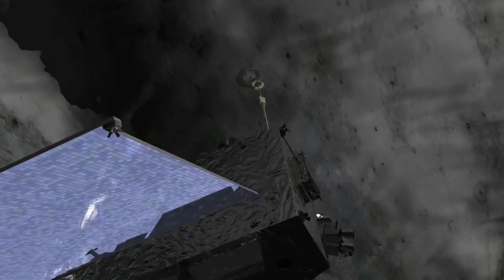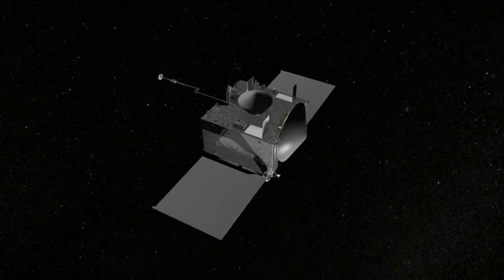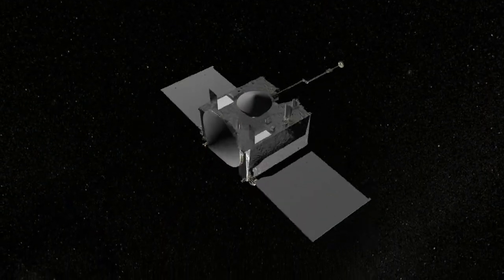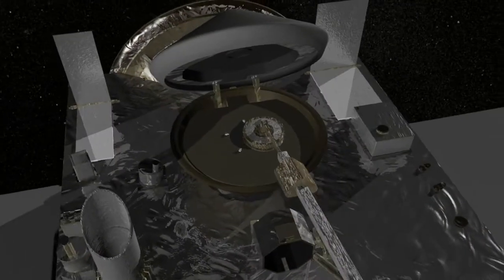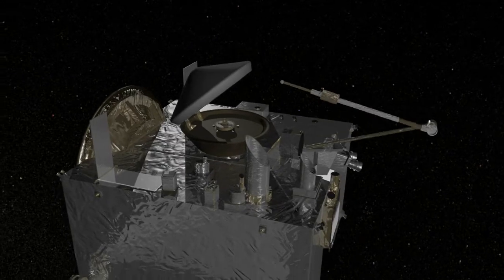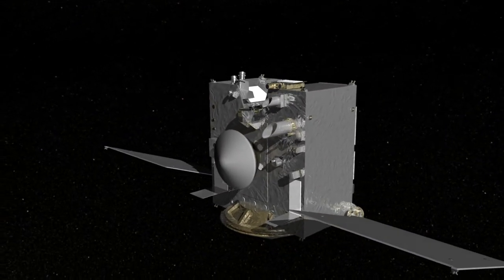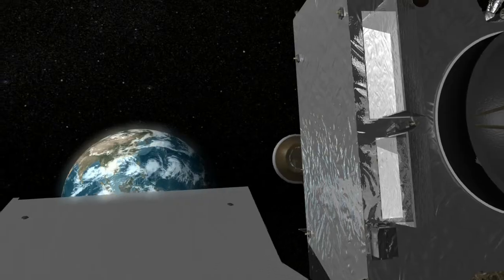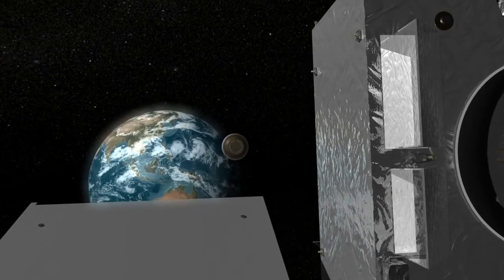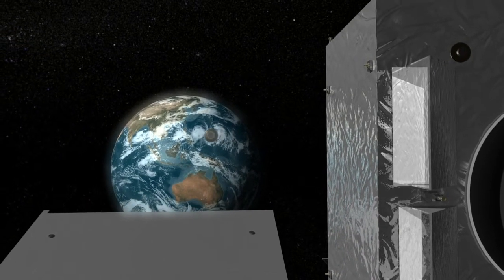After moving away from the surface, OSIRIS-REx will perform a spin maneuver to measure the mass of the sample, then it will carefully stow the TAGSAM head inside the sample return capsule and prepare for the journey back to Earth. Upon arriving home in 2023, OSIRIS-REx will release the sample, giving us a piece of the ancient solar system that will be studied for decades to come.